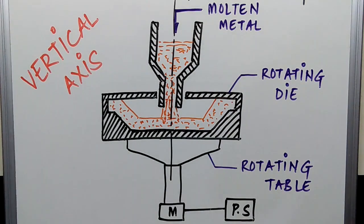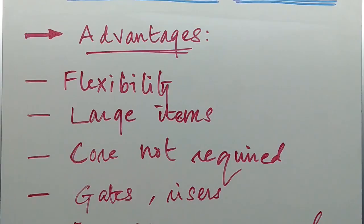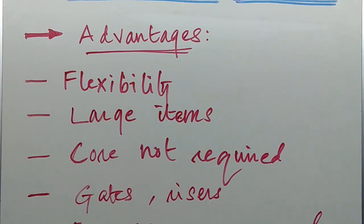Now let's look at the advantages of true centrifugal casting. First, it provides flexibility. If we are producing a hollow job and the thickness needs to be varied, we simply vary the amount of molten metal poured into the metallic mold to achieve the desired thickness.